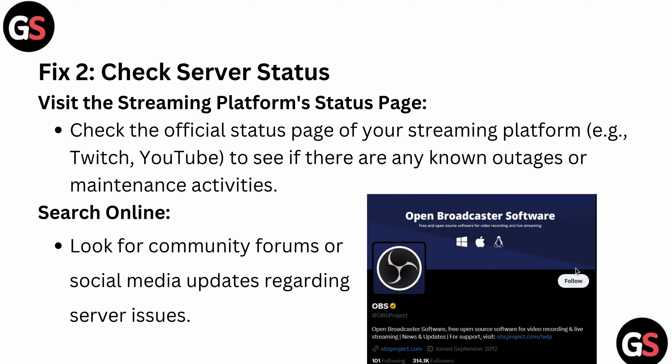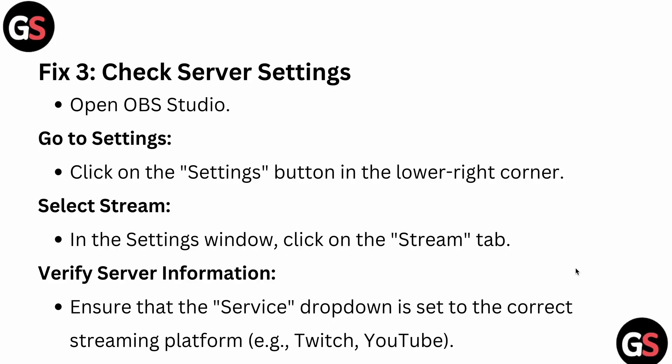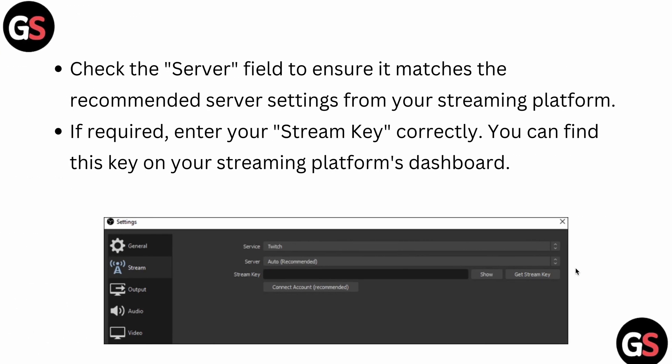You should also check the server settings in OBS. Go to the Settings in the lower corner of OBS and select Stream. In the settings window, click on the Stream tab and verify the server information. Ensure the Service drop-down menu is set to the correct streaming platform, like Twitch or YouTube, and check the server field to ensure it matches the recommended server setting from your streaming platform. If required, enter your stream key correctly — you can find this key on your streaming platform's dashboard.